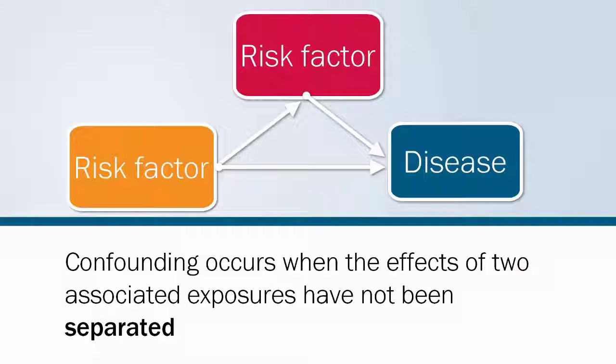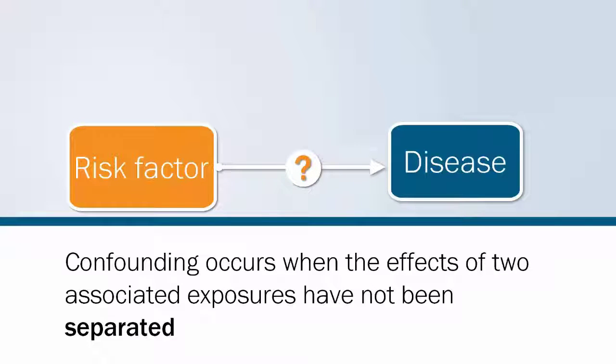Confounding occurs when the effects of two associated exposures or risk factors have not been separated. Therefore, it is incorrectly concluded that the effect is due to one variable rather than the other.